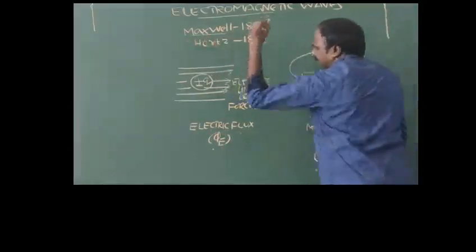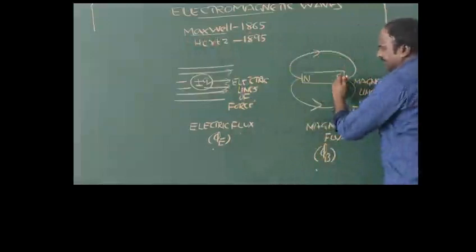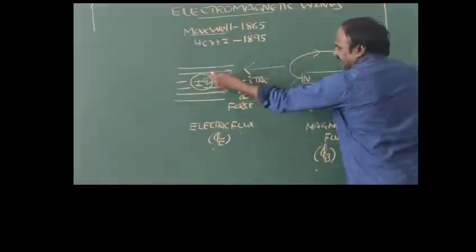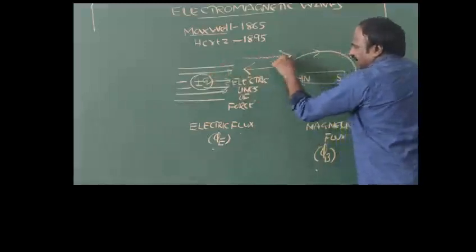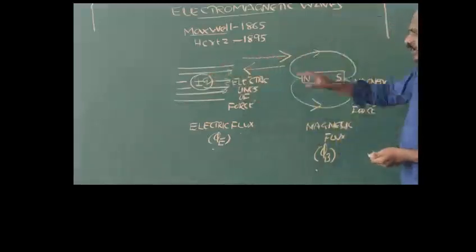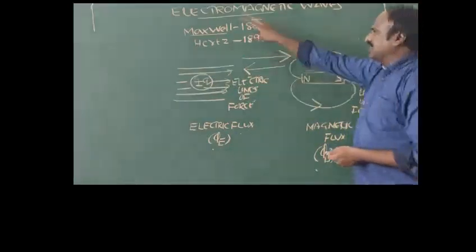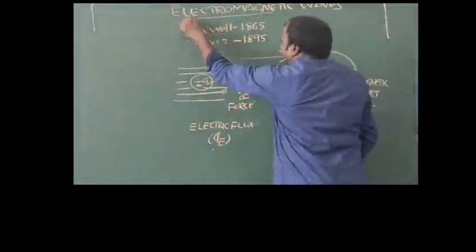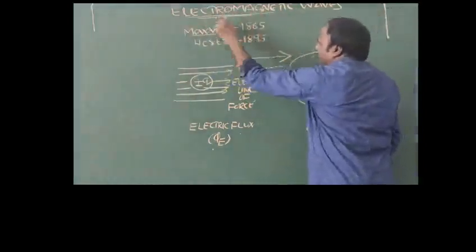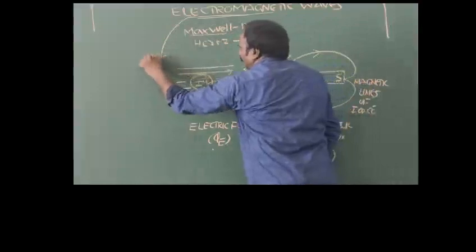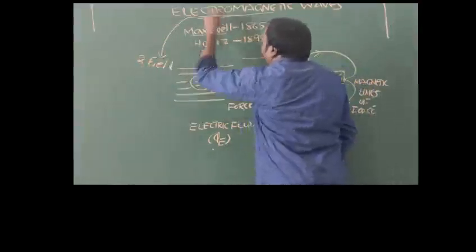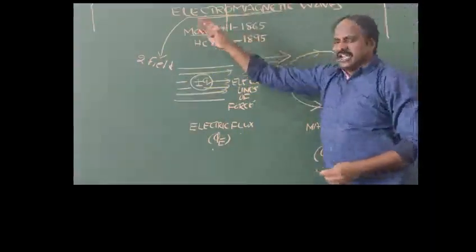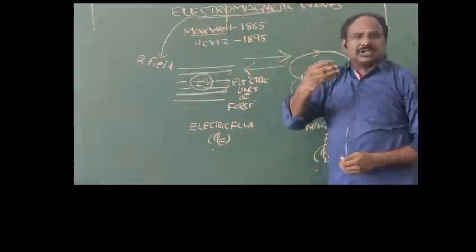What Maxwell proposed is: if magnetic field converts into electric field, is there a chance to convert electric field into magnetic field? This is the key idea behind electromagnetic waves. The term electromagnetic clearly includes two fields — one is the electric field and the second is the magnetic field — and both electric and magnetic fields are always perpendicular to each other.